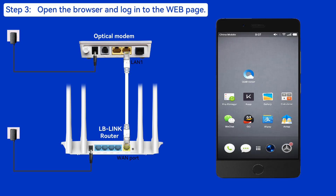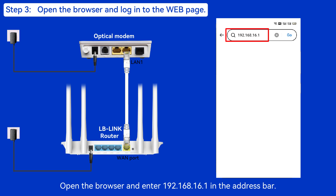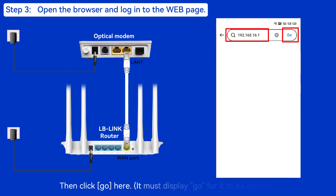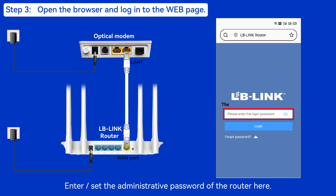Step 3: Open the browser and log in to the web page. Open the browser and enter 192.168.1.1 in the address bar, then click Go. It must display Go for it to be correct. Enter or set the administrative password of the router here.